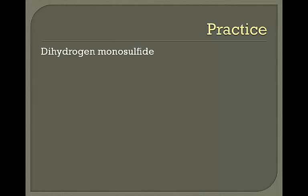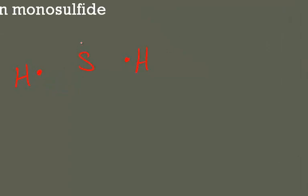Our next example is dihydrogen monosulfide. Dihydrogen tells us we have two hydrogens, monosulfide means one sulfur. We have a shared pair here and a shared pair here. We still have four total pairs of electrons — one, two, three, four — but in those four total pairs, we only have two shared and two unshared.